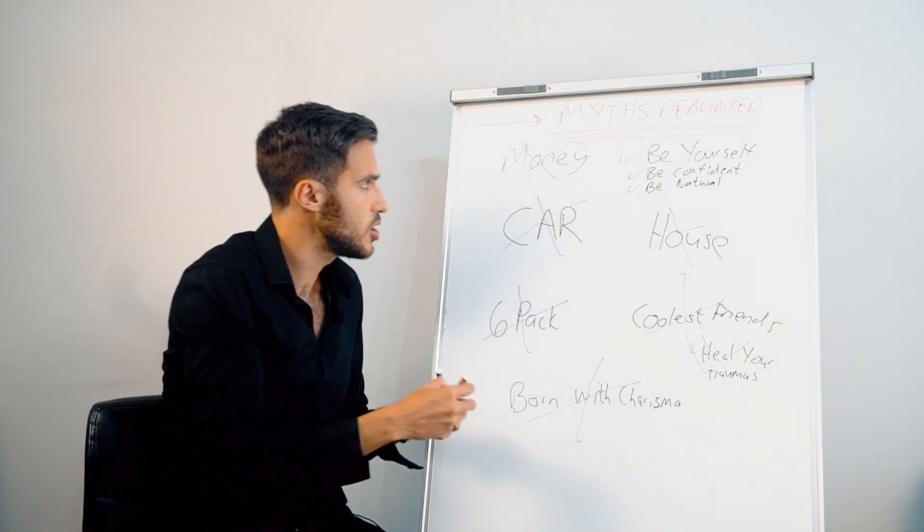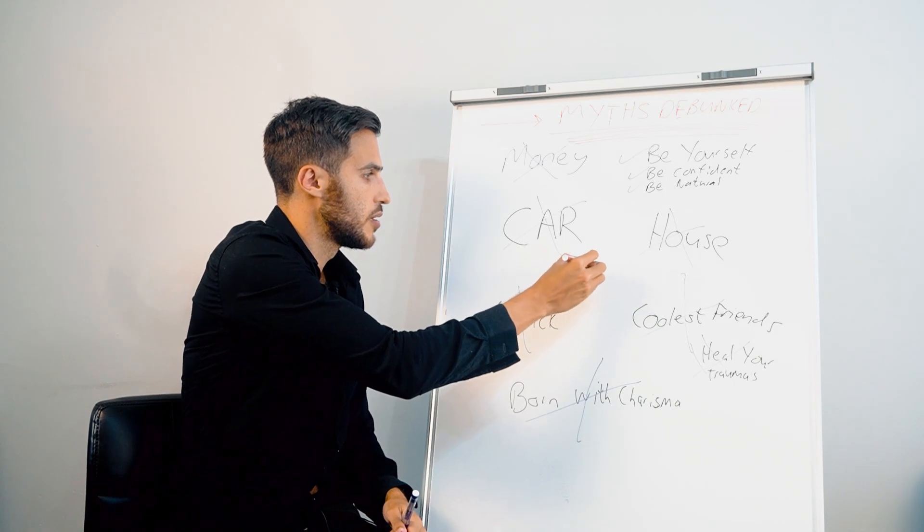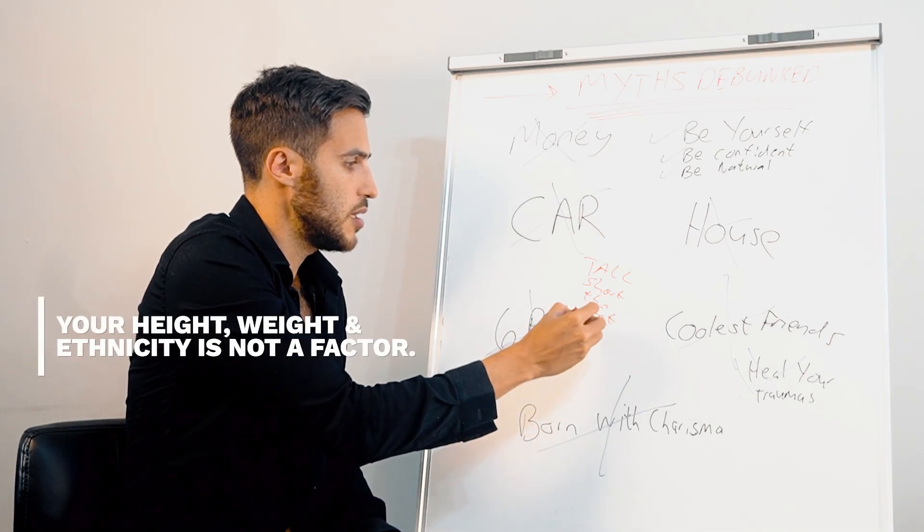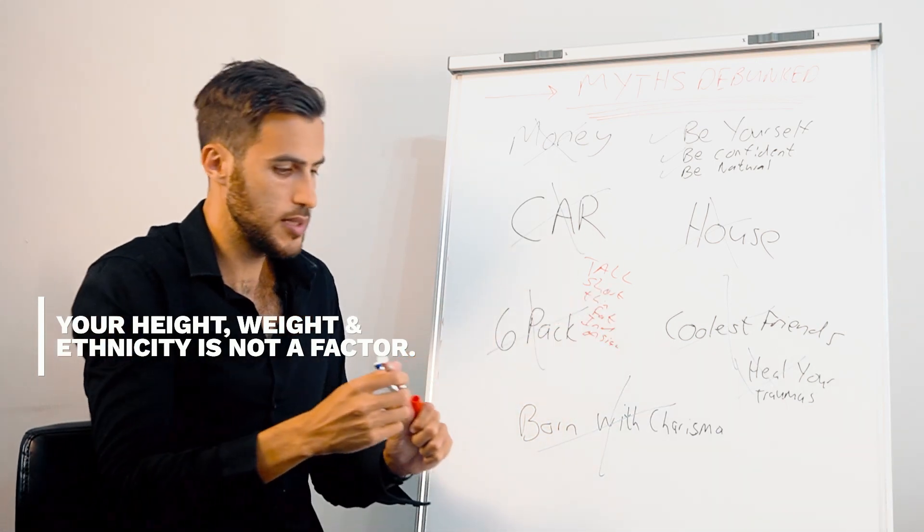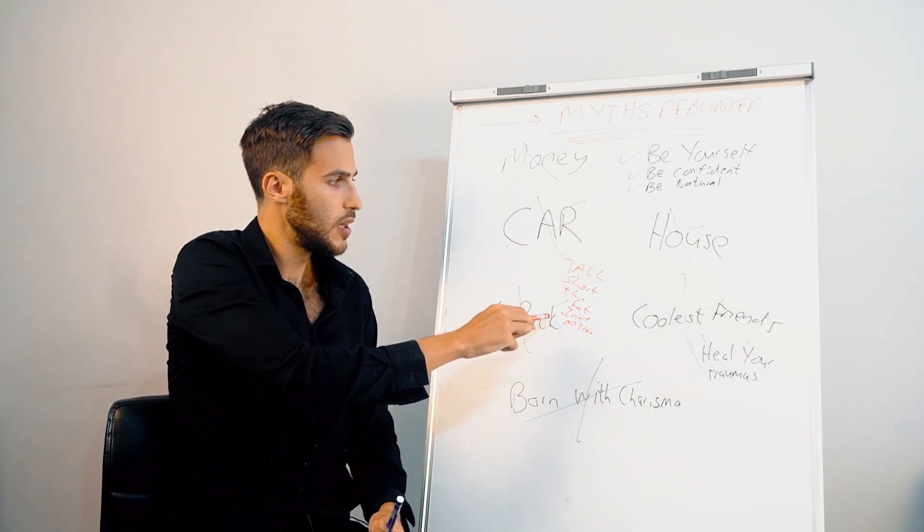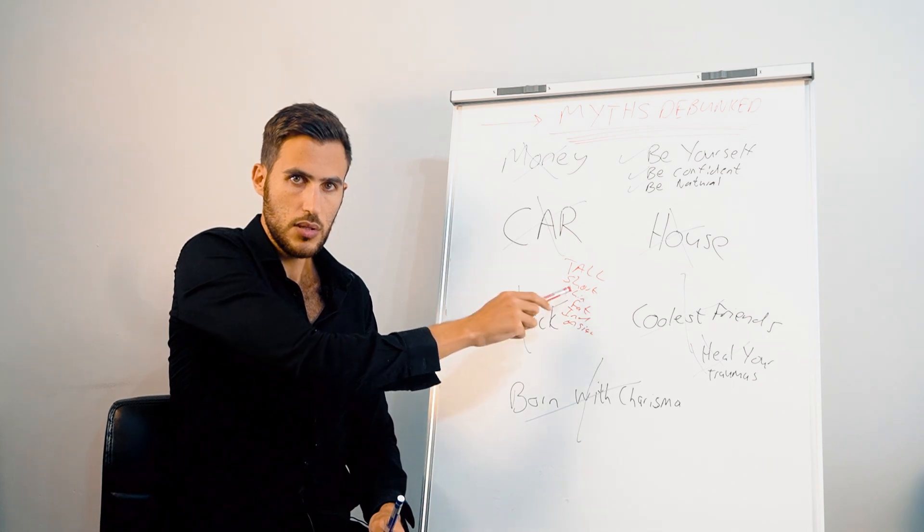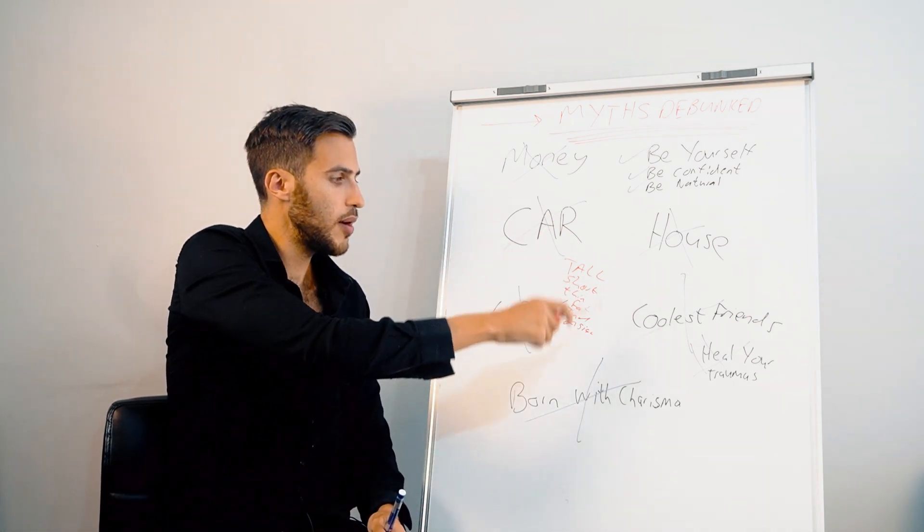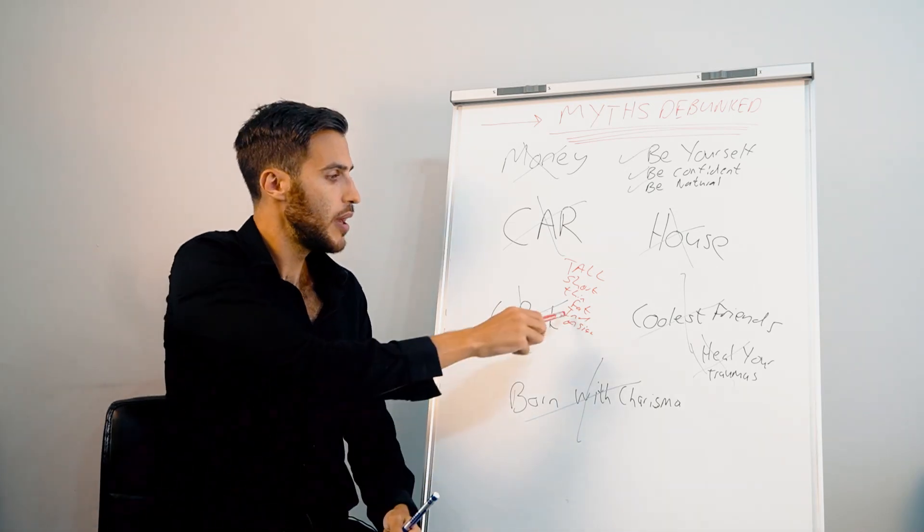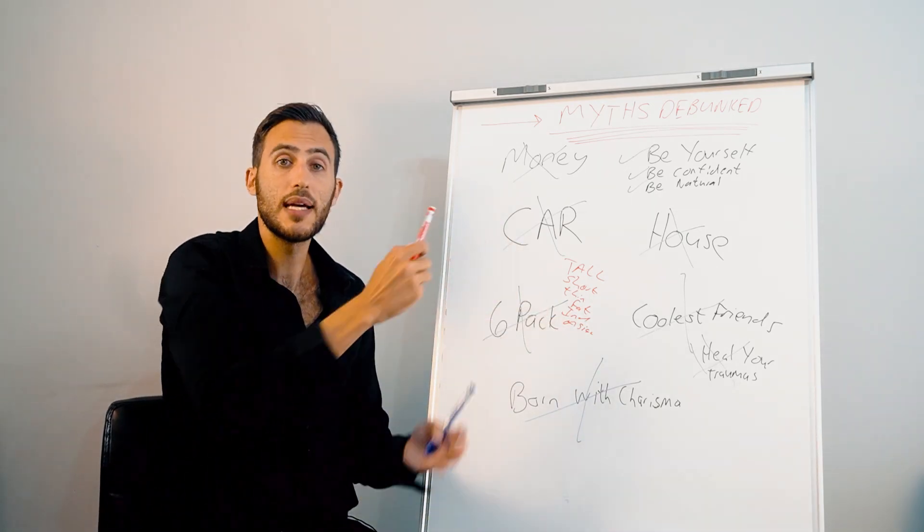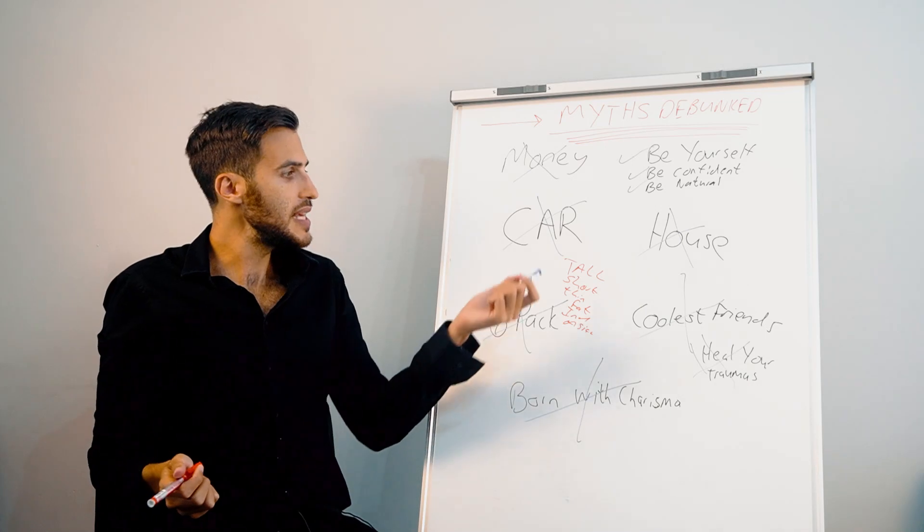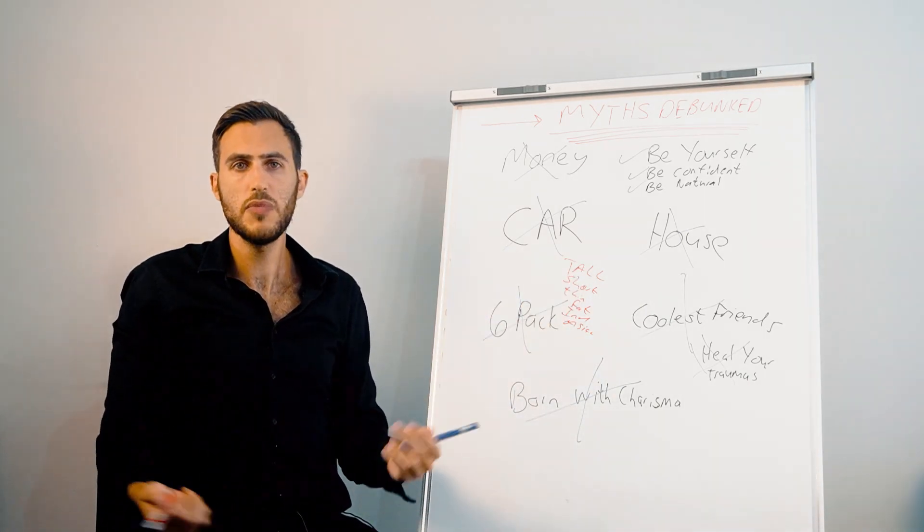So then the final thing that I wanted to mention is exactly what I just said there. Tall, short, thin, fat, Indian, Asian, whatever it is. Black, white. I'm telling you, whatever excuse you have over here, whatever your limiting belief is. I've met guys that are short that get girls on our program. Guys that are thin that get women. Guys that are fat that get women. We've got plenty of Indian guys, Asian guys, white guys, black guys from America, Australia, Europe, everywhere that join the program and they start to crush it. So I'm telling you that your limiting beliefs, these myths, they're not true.